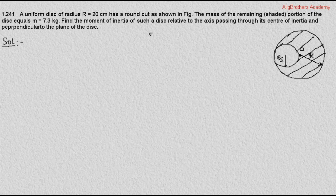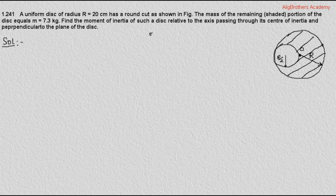Question number 1.241. A uniform disc of radius R equal to 20 cm has a round cut as shown in the figure. The mass of the remaining portion of the disc equals m equal to 7.3 kg. We have to calculate the moment of inertia of such a disc relative to the axis passing through its center and perpendicular to the plane of the disc.